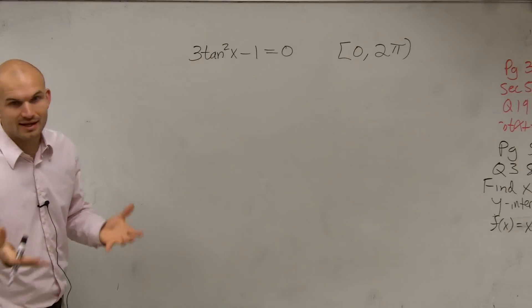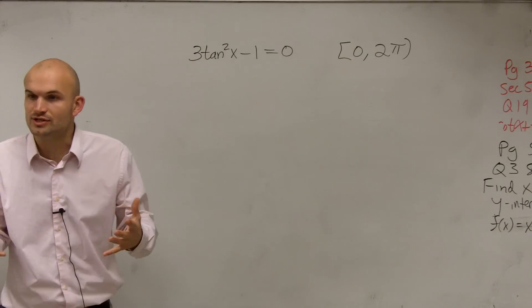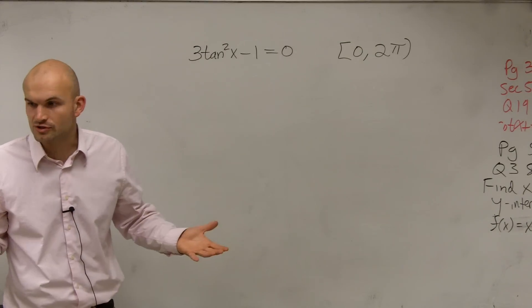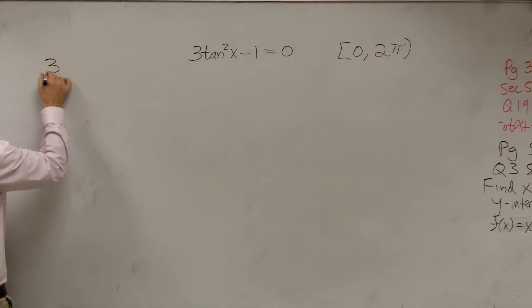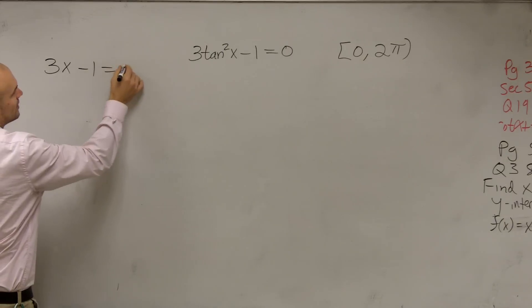So the main important thing that I like to do when first teaching this is to just solve the equation without the trig function. So let's go back to a little bit of algebra 1. Let's just pretend I had 3x minus 1 equals 0.